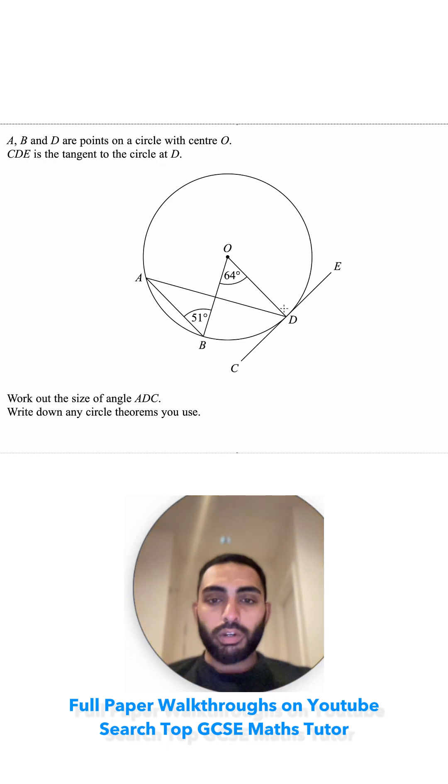If you told me it's a tangent, I'm going to draw a radius first. I know when I've got a tangent to the circle, the angle created here will be a right angle and that angle will also be a right angle.